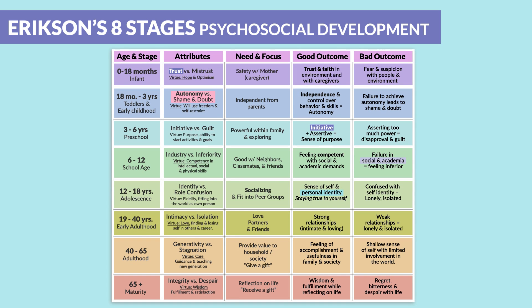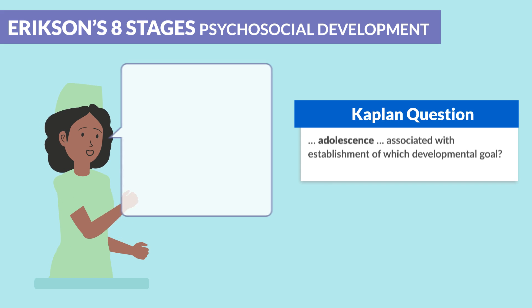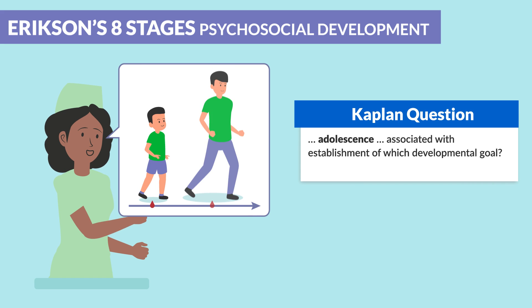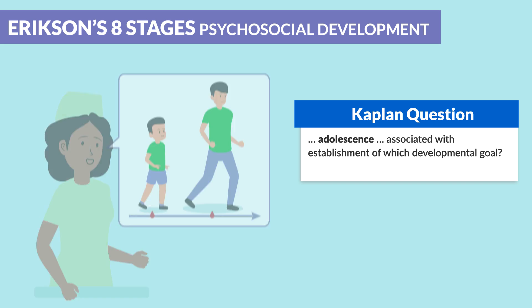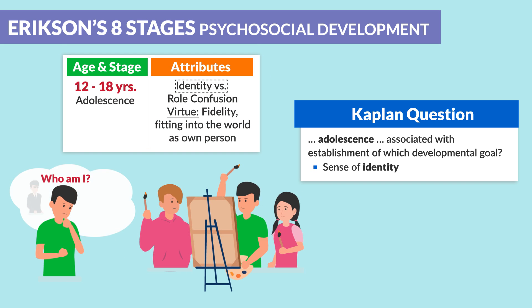This is a big chart, so let's drill down and see exactly how test questions are presented. Kaplan mentions adolescence associated with the establishment of which developmental goal — a sense of identity. As you can see, our teenagers, or basically adolescents, are trying to find themselves. Personal identity is the main developmental goal.